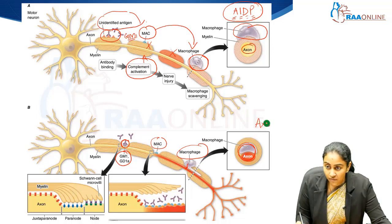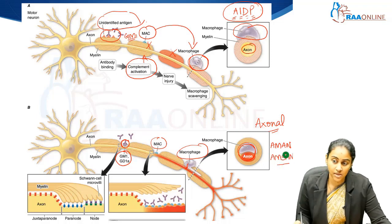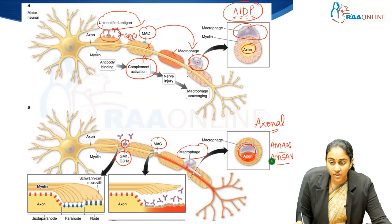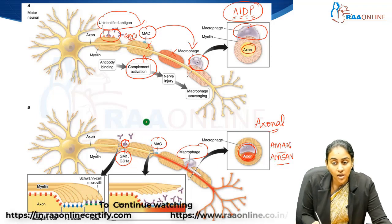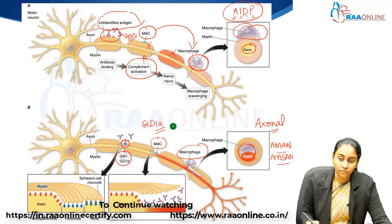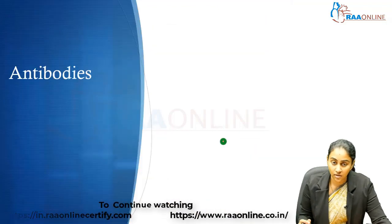These axonal variants of GBS are called acute motor axonal neuropathy (AMAN) or acute motor sensory axonal neuropathy (AMSAN). These are the two axonal variants where there is significant axonal damage due to antibodies targeted against the GD1A antigen. This is basically how and why GBS occurs.